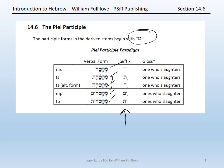You can recognize a PL participle by the doubled second root letter, by the PATAH under the first vowel, and by the SCHWA under the MIM. The PL participle, then, is recognizable with all the characteristics of the PL plus the prefixed MIM. And this prefixed MIM will be characteristic of the participles in all the derived stems.